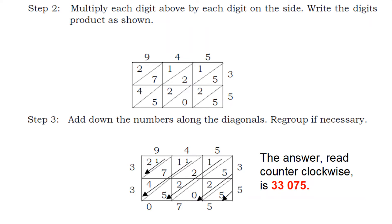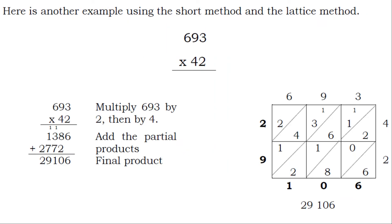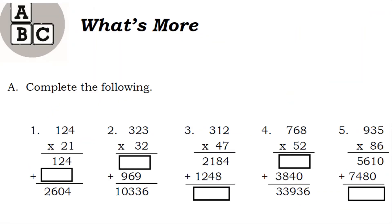The answer read counterclockwise is 33,075. Here is another example using the short method and the lattice method: 693 times 42. Multiply 693 by 2, then by 4, and add the partial products. The final product is 29,106. What's more — answer and complete the following problems.